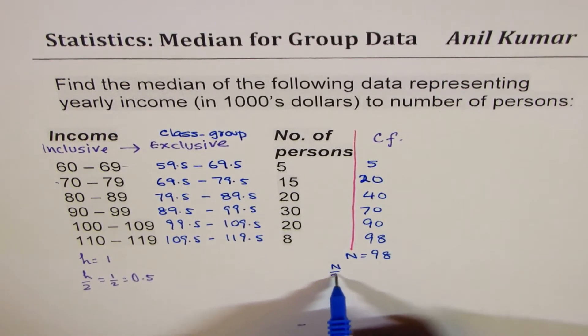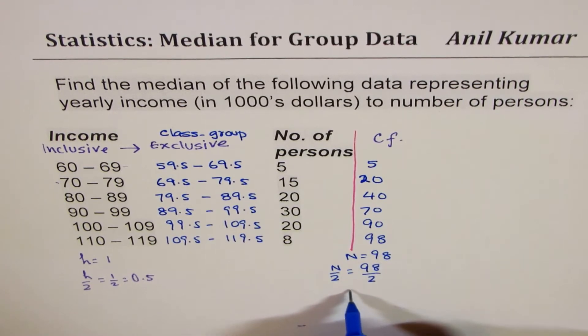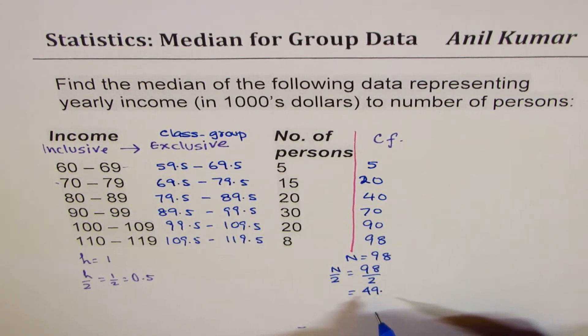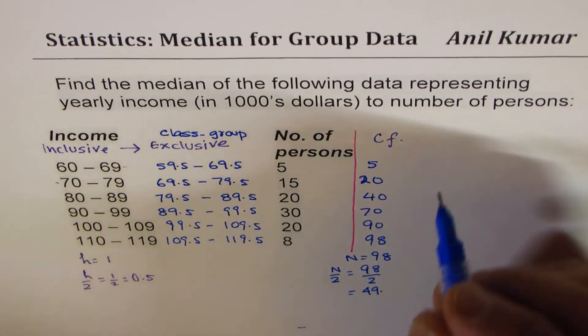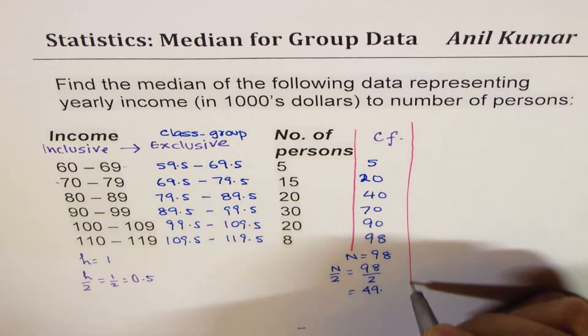And n by 2 is half of 98, which is 49. So half of 98 is 49. What we get here is a value of our interest. When we are looking for a median, we can start with our formula.